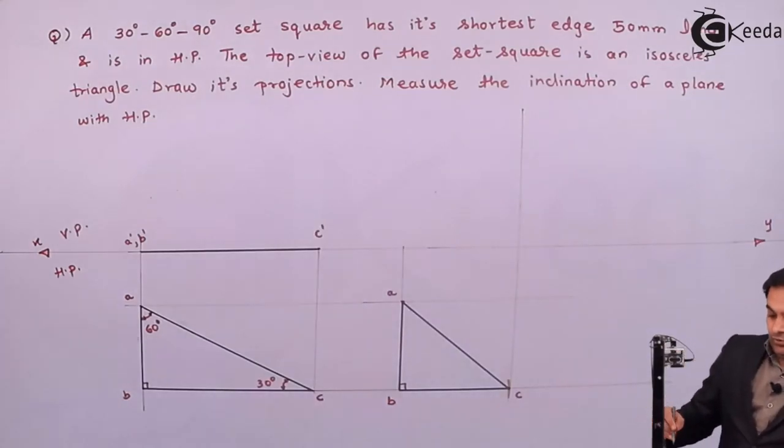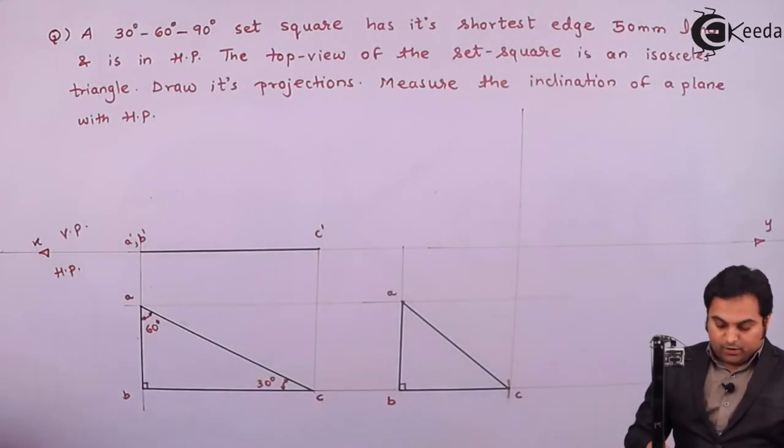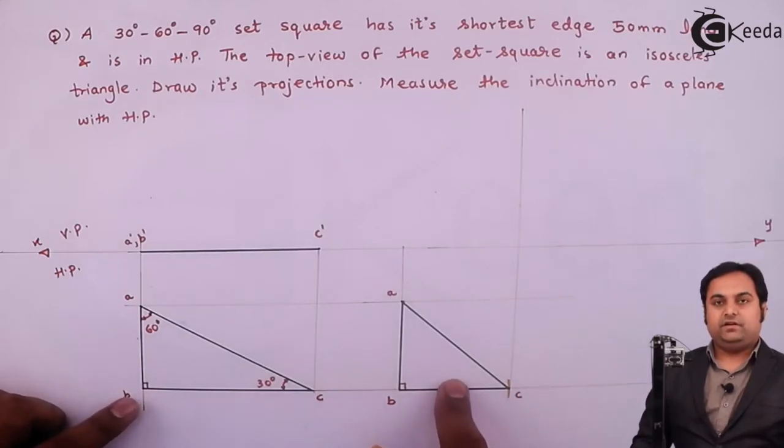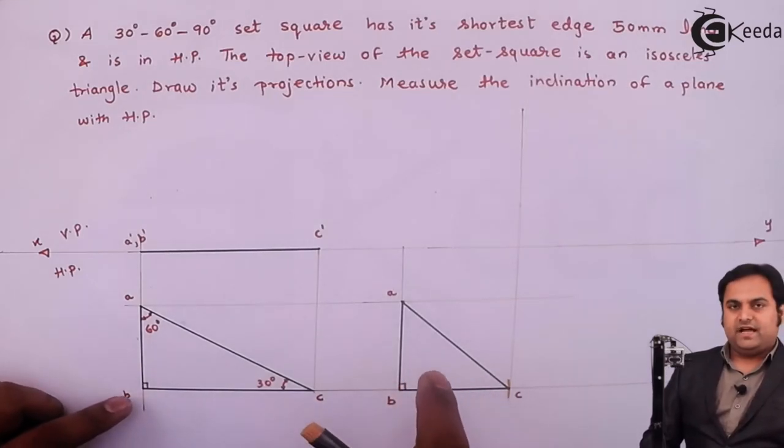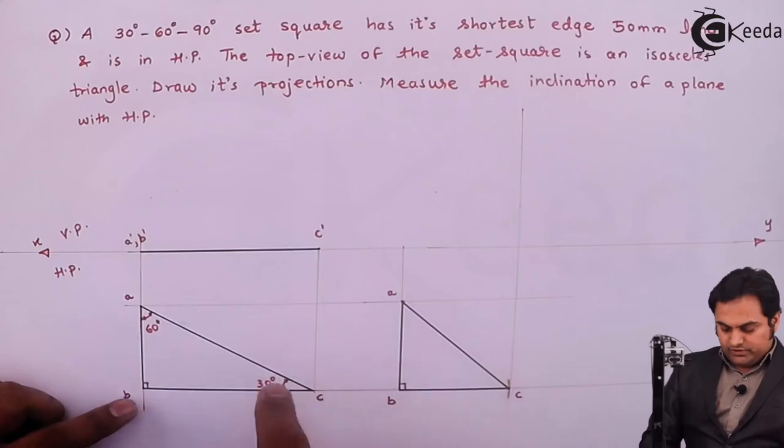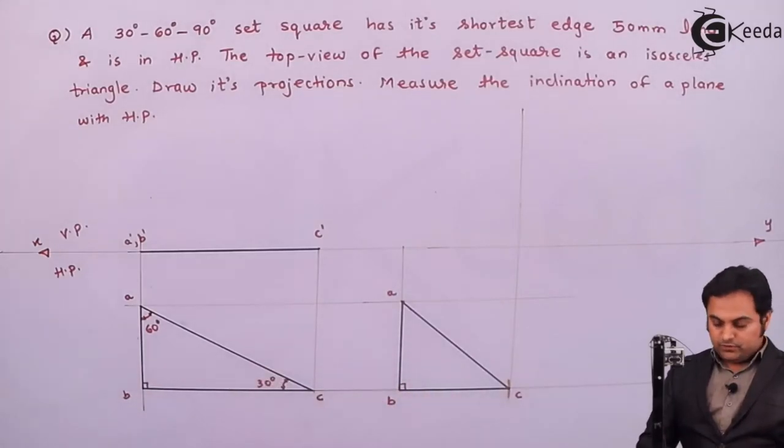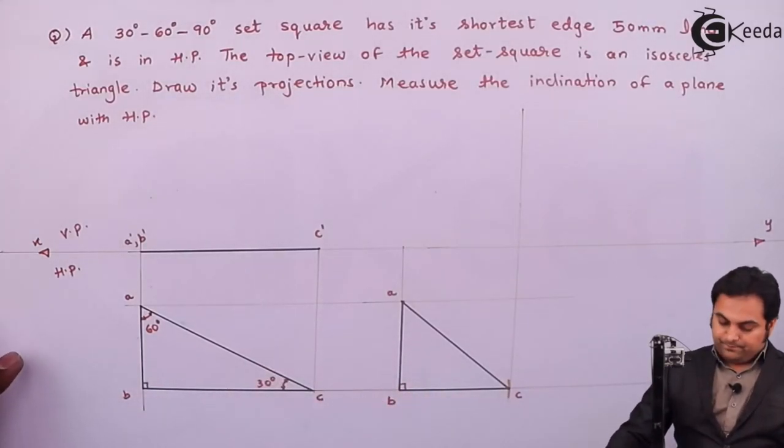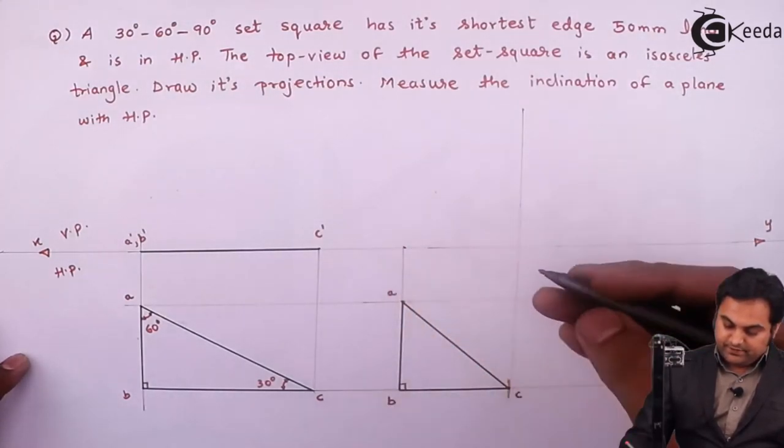Next, I need to know the inclination of this set square because this set square which we are seeing, it is not the true shape. It is the apparent shape which we get when this set square has been tilted. So here, I'll say that this is point A and B.